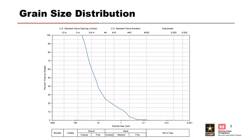A quick question on gradation curves: what is your D60? The reason I ask is that I was in a meeting where an engineer said 'I need a D90 of 30 percent,' which made zero sense. The D stands for diameter — D60 means the diameter at which 60 percent of the material is finer than that number. The answer is approximately 20 millimeters.